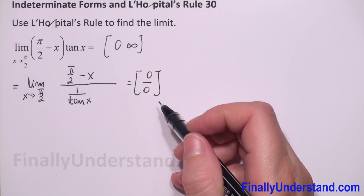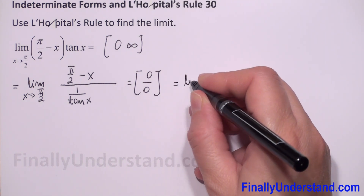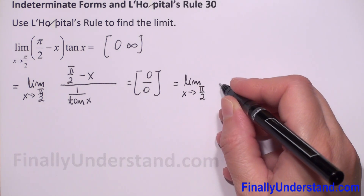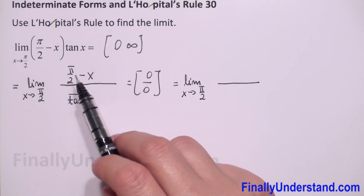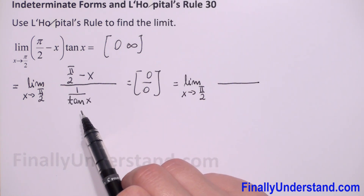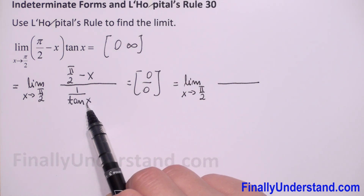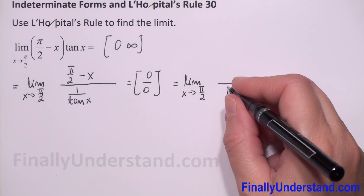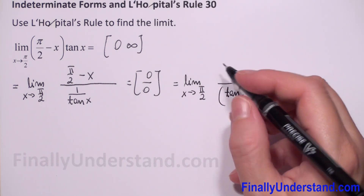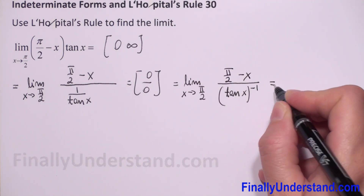This means we have an indeterminate form and we can use L'Hôpital's rule. The limit as x approaches pi over 2 will equal the derivative of the function in the numerator over the derivative of the function in the denominator. Because we have 1 over tangent of x in the denominator, I can rewrite this as tangent of x to the power negative 1.